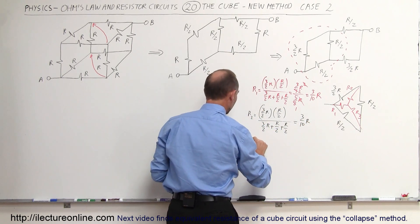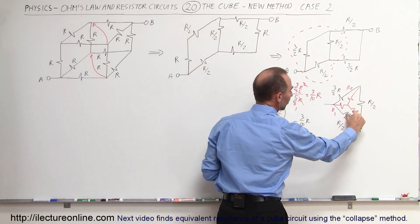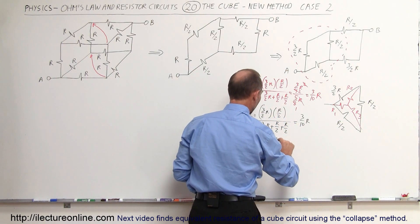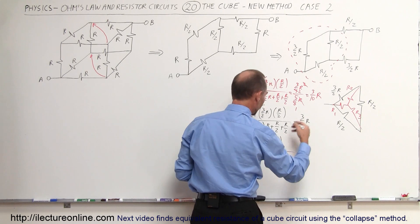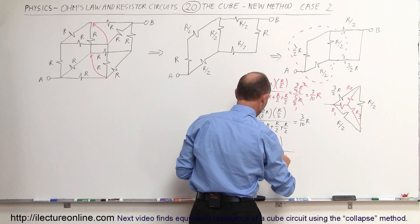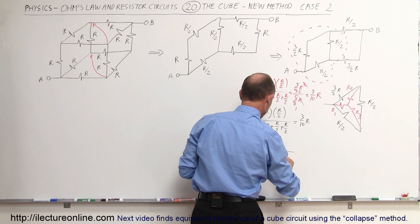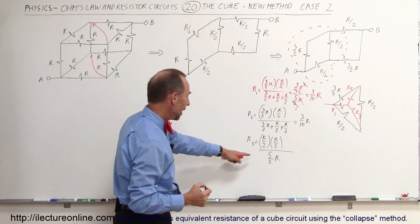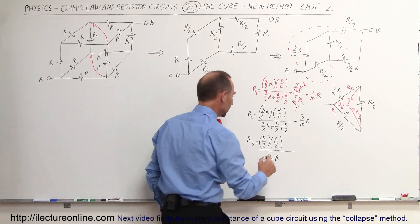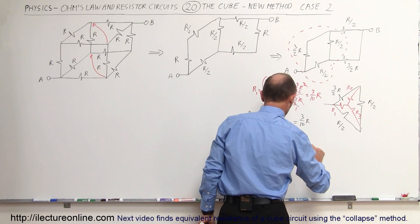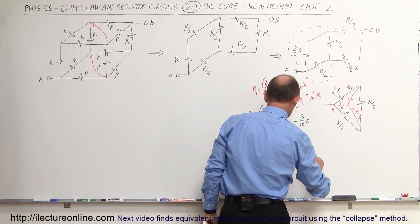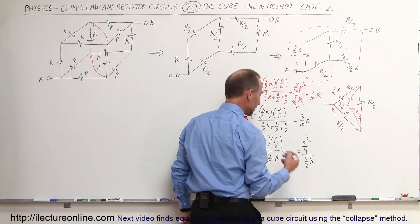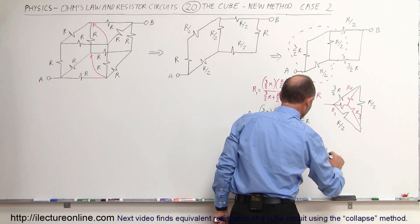Finally, the third resistor: to find R3 we multiply its two adjacent resistors, which are R/2 times R/2, divided by the sum, which is also 5/2 R. That equals R²/4 divided by 5/2 R. That cancels out and equals 1/10 R.